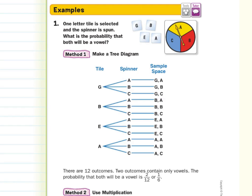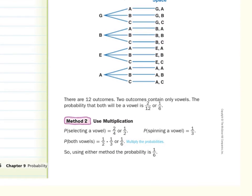What is the probability that both will be a vowel? Looking through the sample space, we find 2 outcomes where both are vowels, so 2 out of 12, or 1 sixth. Now, just like the fundamental counting principle made it easier to count the number of outcomes, multiplication gives us an easier way than tree diagrams to calculate probability. The first event is the probability of selecting a vowel from the letter tiles — 2 out of 4, which is 1 half. The probability of spinning a vowel is 1 out of 3, so 1 third. Taking 1 half times 1 third, we also get 1 sixth. So whether we use the tree diagram or multiplication, we get the probability 1 sixth.